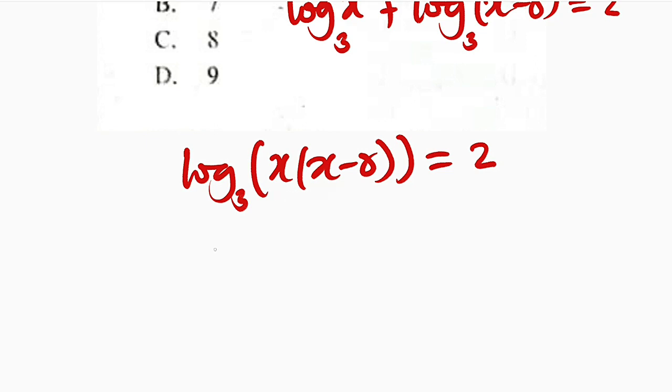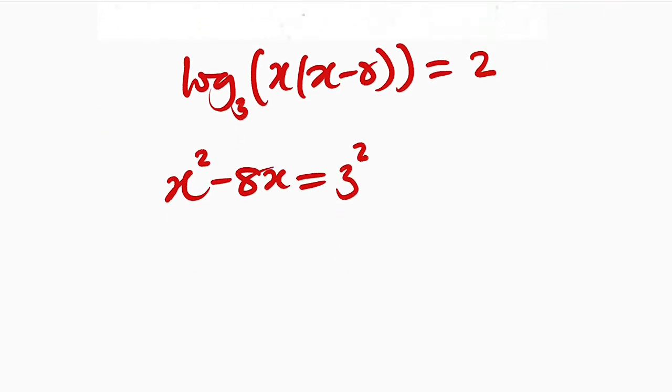Therefore, let us expand this. x times x is x squared minus 8 times x. And this is equal to 3 to the power of 2, which is 9. And hence, this is x squared minus 8x minus 9, if you take it to the other side. And this is equal to 0.